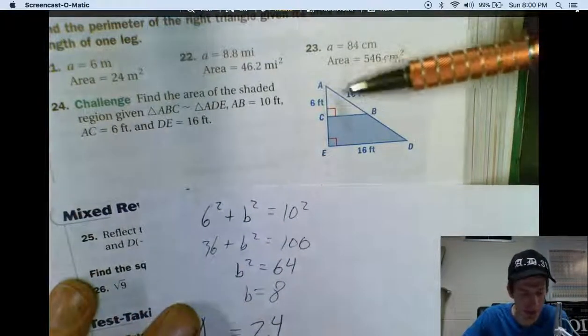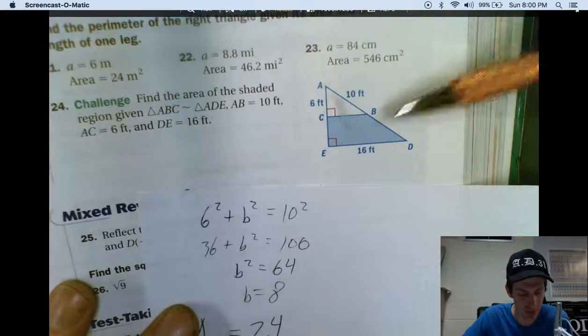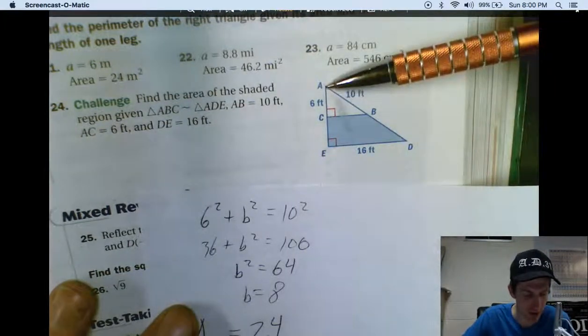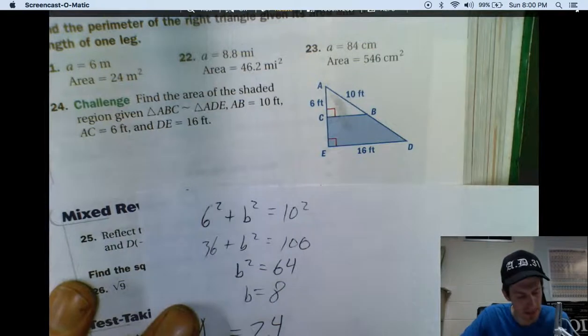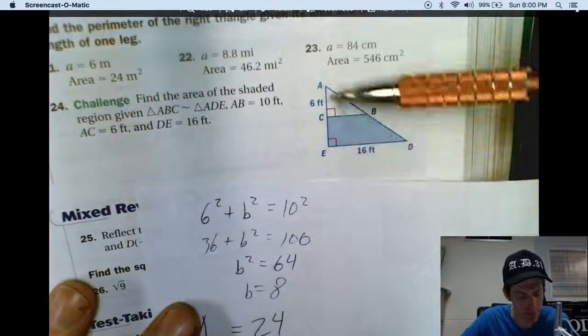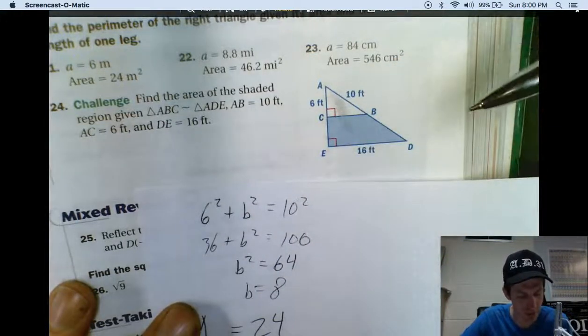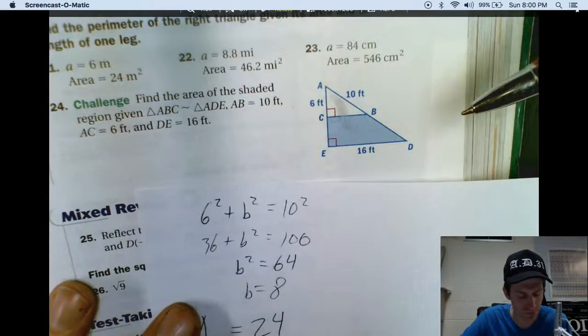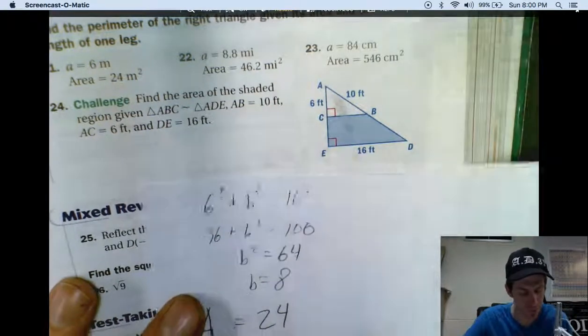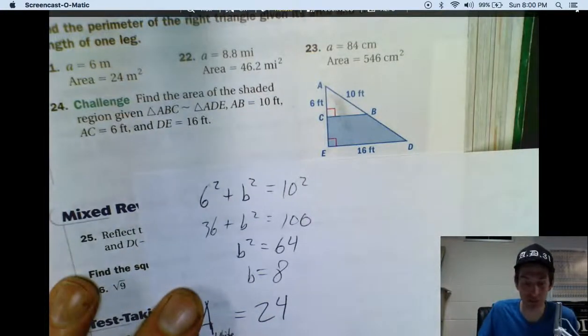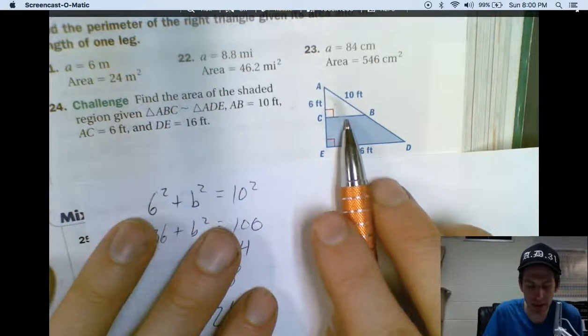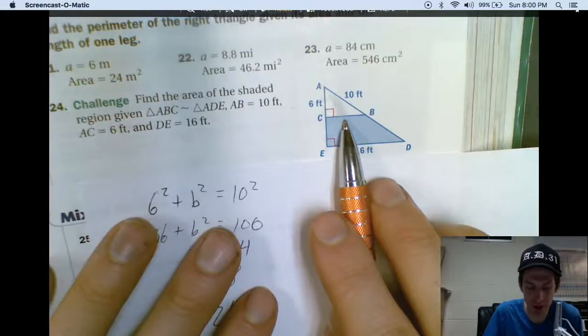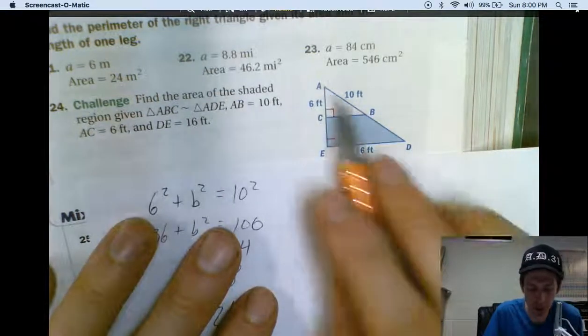Now, we've got to find the area of the whole big triangle. We know the base is 16. We know that this part of this side is 6. But, we don't know what that one is. But, we do know this other interesting little tidbit. And, that is that ABC is similar to ADE. Well, this was a challenge. Here's how it works. What's this length for CB? It's 8. Right? We figured out that that's 8. If this white triangle is similar to the big triangle.